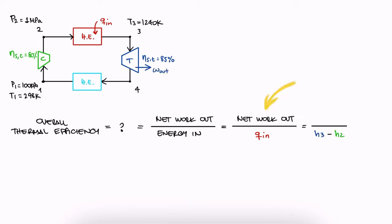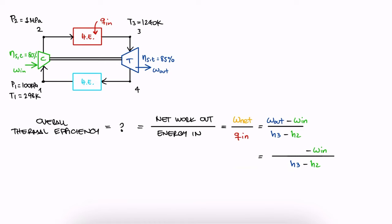The energy in the form of work that we can use comes out from the turbine, but part of it is used to feed the compressor. Therefore, the term in the numerator is the net specific work equal to the specific work that the turbine produces, minus the specific work that the compressor uses. The specific work that the turbine produces is h3 minus h4, and the specific work that the compressor uses is h2 minus h1. And that's all we need.